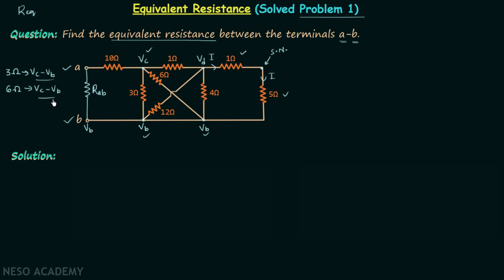Since both the 3 ohm and 6 ohm resistors have the same voltage across them, they are in parallel combination. Similarly, the 4 ohm resistor has voltage Vd minus Vb across it, and the 12 ohm resistor has the same voltage Vd minus Vb, so the 4 ohm and 12 ohm resistors are also in parallel.